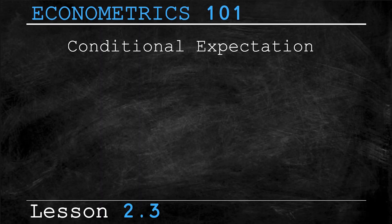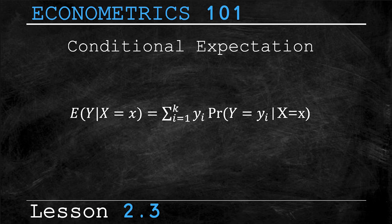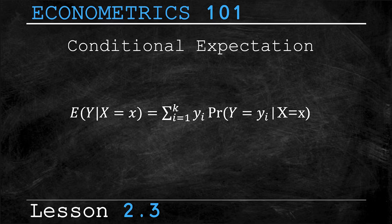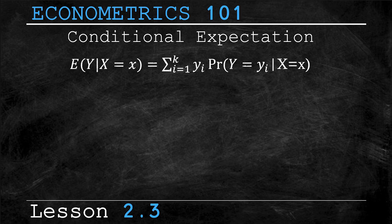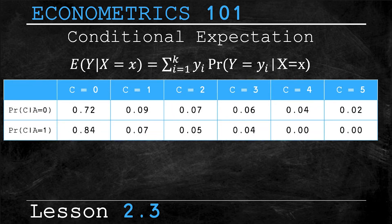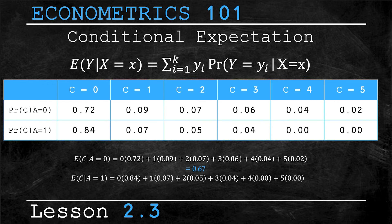Next, let's look at conditional expectation. This is essentially the expected value for uppercase Y calculated using the conditional distribution of Y given X equals a specific value lowercase x. As we know from earlier lessons, expected value is also the mean, so this is also referred to as the conditional mean. We are estimating the expected number of times a computer will crash given its age. Applying the formula, it's the weighted average of the conditional distributions. The expected crashes given an old computer (A equals zero) is 0.67, and given a new computer (A equals one) is only 0.29. These are average crashes, not percentages, which is why they don't sum to one.